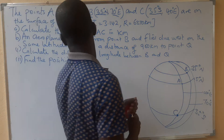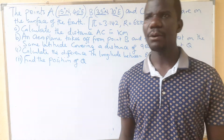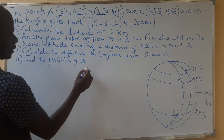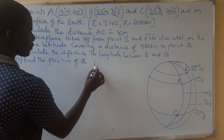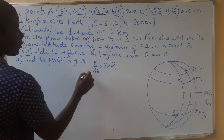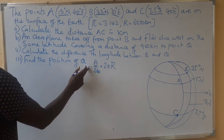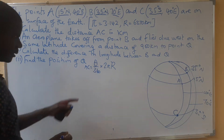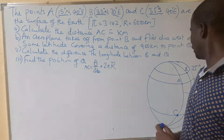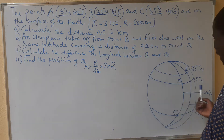Now we answer the questions. Calculate the distance AC — from A to C. You realize that these two points are on the same longitude, and if that is the case, the formula we use is the arc length formula. This theta here is the difference in latitudes between A and C — the latitudes that pass through A and C.